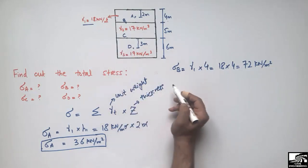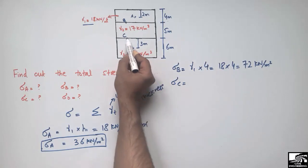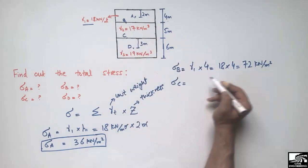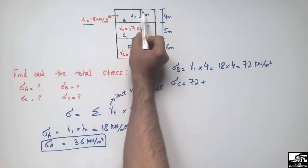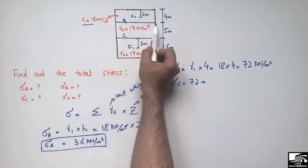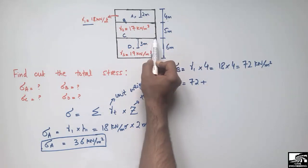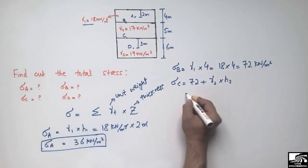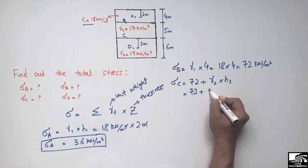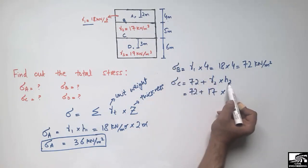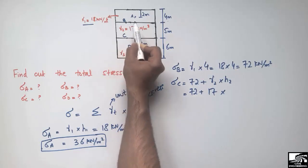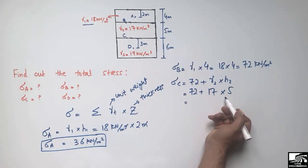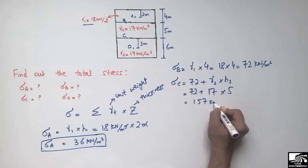Finding the stress at point C is slightly more involved. The stress at point C equals the stress from the layer above plus the contribution from the second layer. So it is 72 plus gamma₂ times h₂, where gamma₂ is 17 kN/m³ and h₂ is 5 meters — the thickness of the second layer from bottom of layer one to bottom of layer two. This gives 72 plus 85, equalling 157 kN/m².